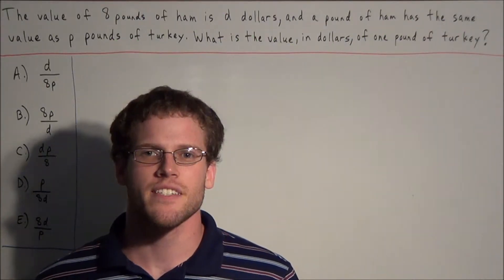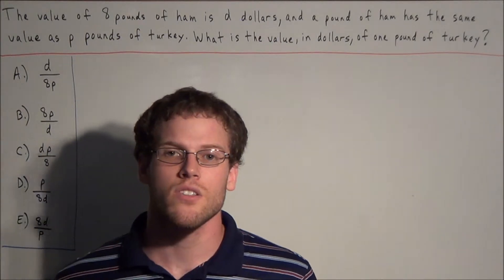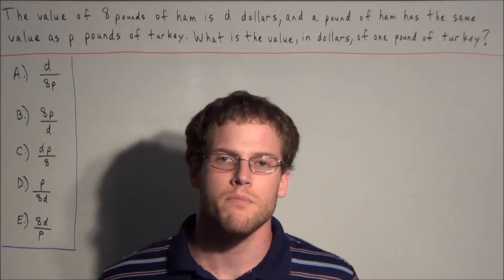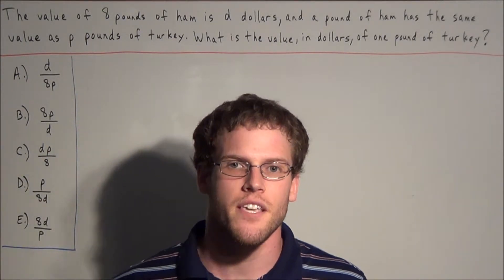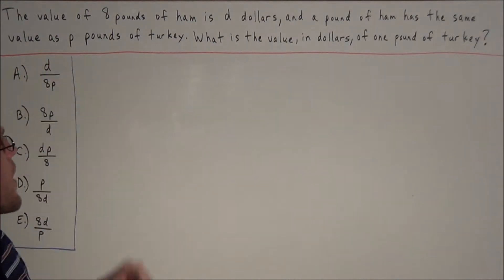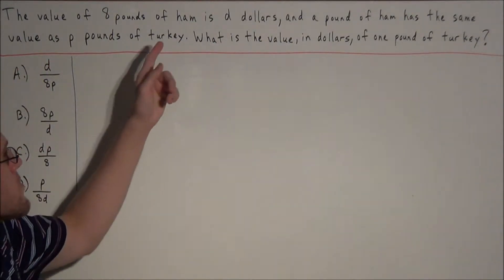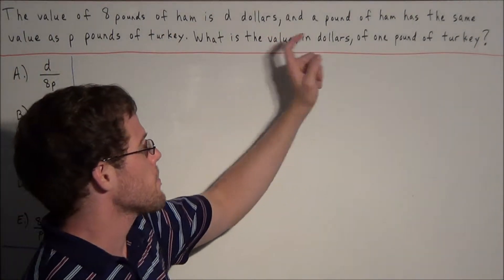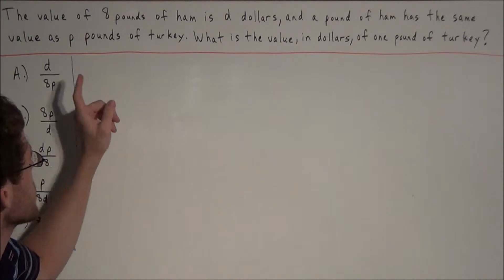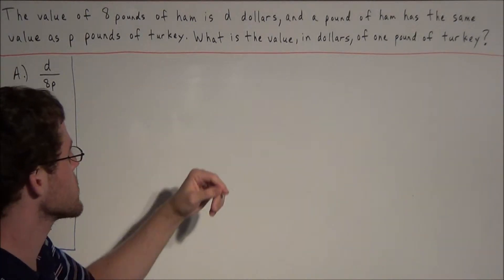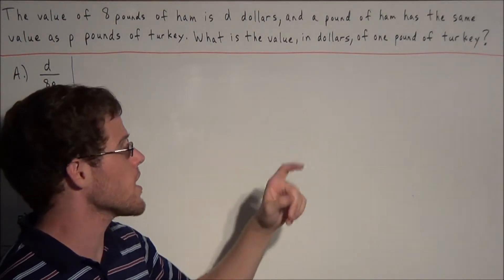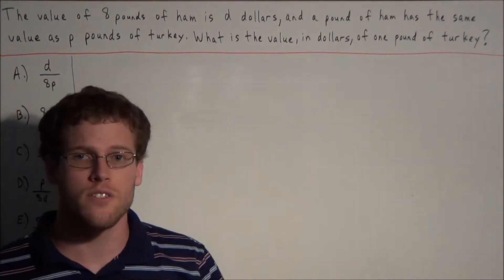Hi, my name is Vincent and today I want to take a look at a ratio problem as it appears on the SAT exam. We have the value of 8 pounds of ham is d dollars, and a pound of ham has the same value as p pounds of turkey. What is the value in dollars of one pound of turkey?